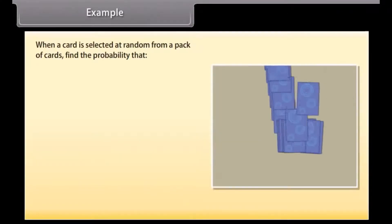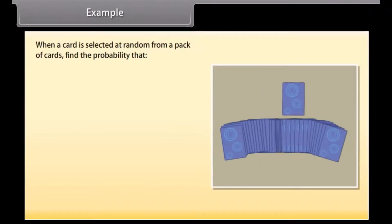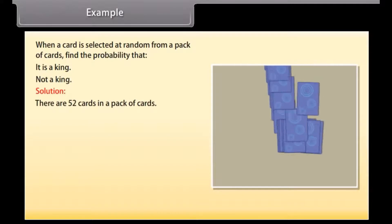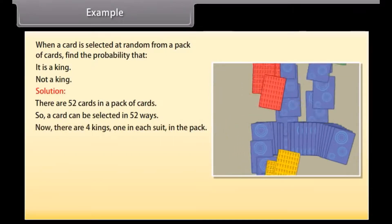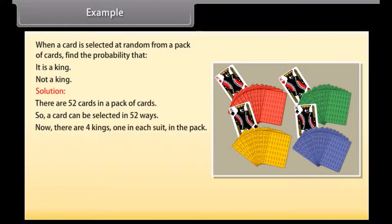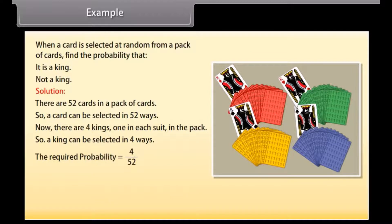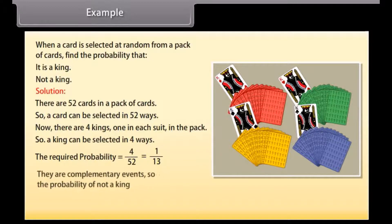When a card is selected at random from a pack of cards, find the probability that it is a king or not a king. Solution: There are 52 cards in a pack, so a card can be selected in 52 ways. There are 4 kings, one in each suit, so a king can be selected in 4 ways. P(king) = 4/52 = 1/13. Since these are complementary events, P(not a king) = 1 − 1/13 = 12/13.